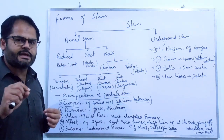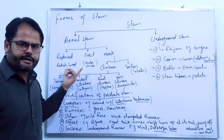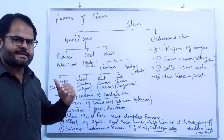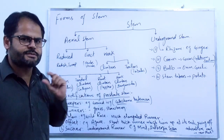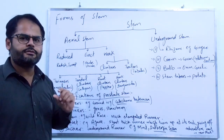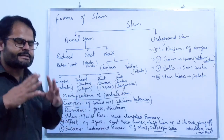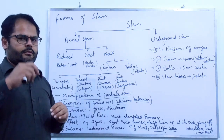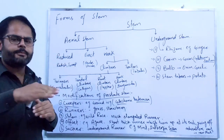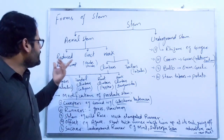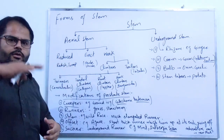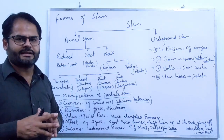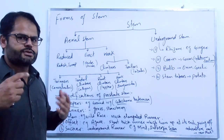Familiar examples of reduced stem are radish and turnip. In this case the stem is very much smaller and it is often confused with root, but it is not a root — it is the smallest stem. From the upper portion of the reduced stem, leaves arise, and from the lower portion, thick fleshy roots arise which consist of stored food, like in radish and turnip.